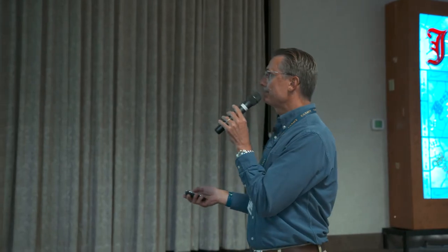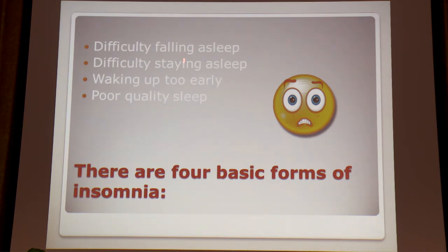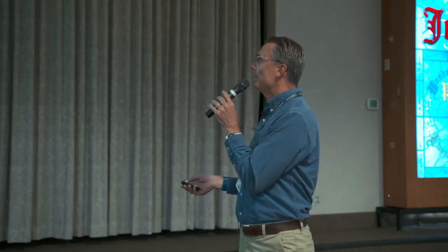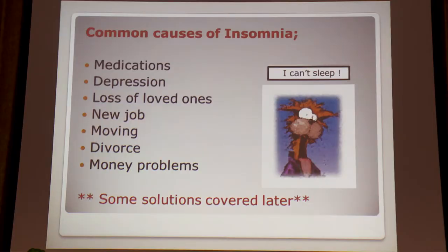Falling asleep behind the wheel is a serious risk with untreated apnea. There are also dental guards that advance the jaw that work. Insomnia is the number one sleep issue with older adults — disrupted, insufficient, or non-restorative sleep. 49% of adults have occasional sleeping difficulties and 12% have frequent insomnia. The four forms are: difficulty falling asleep, staying asleep, waking up too early, and poor quality sleep. Common causes include medications, depression, loss of loved ones, job changes, moving, divorce, and money problems.